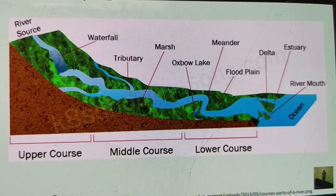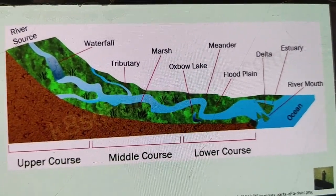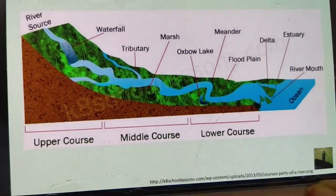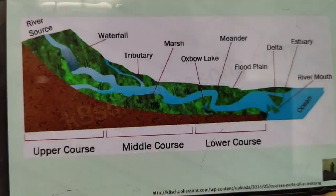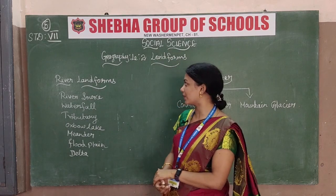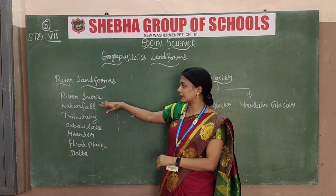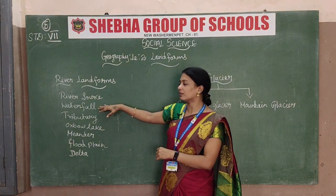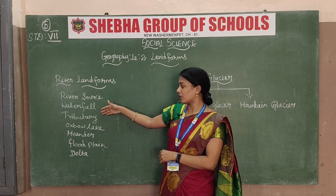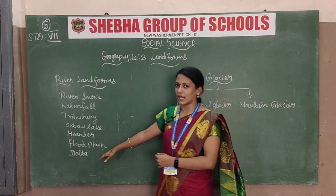Deltas are excellent productive land — for example, the Kaveri delta. The delta place is very productive land, used for agriculture. So to summarize: from river landforms, we have the river source first, then waterfalls, then tributaries, then meanders and oxbow lake, then floodplain, and our last one is the delta.